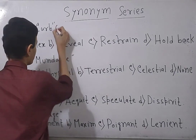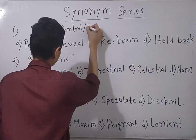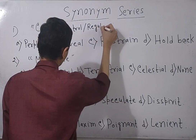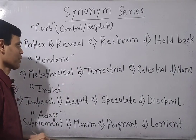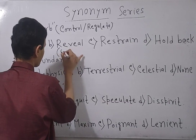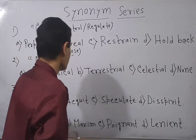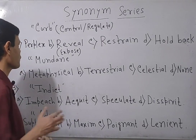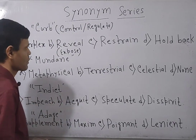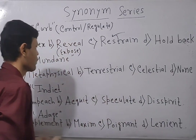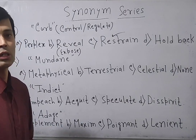So, curb means control or regulate. Perplex means puzzle, confuse, or flabbergast. Reveal means expose, divulge, or disclose. Hold back means maintain secrecy. So, as far as the question is concerned, the word is curb — out of the given options perplex, reveal, restraint, hold back — the perfect synonym for the word curb is 'restraint'. It means control, regulate, or curb. Another meaning of curb may be suppress or put down something.